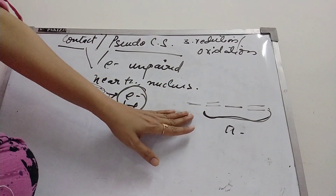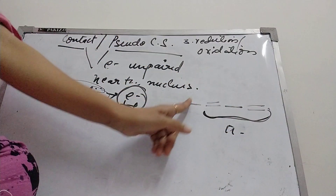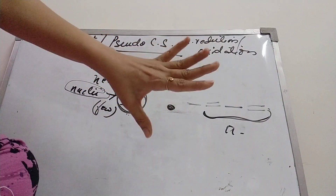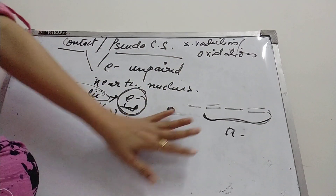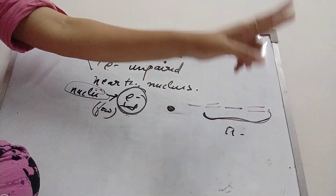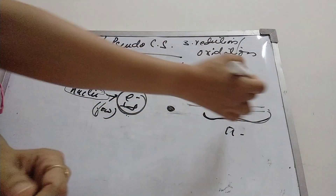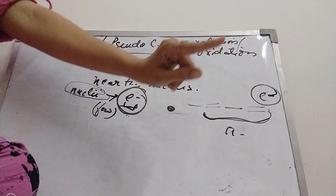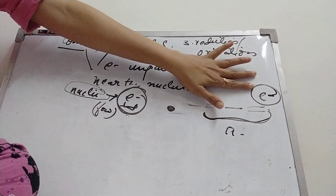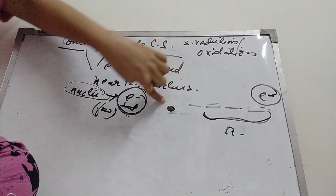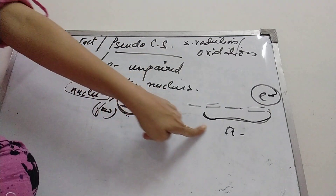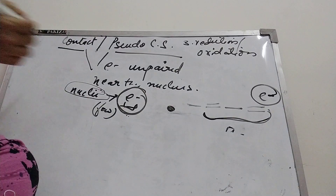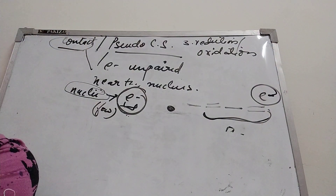There must be a pi bond present. Even if the paramagnetic nucleus is farther away, if there is a delocalized pi set of electrons between the paramagnetic ion and the NMR active nucleus, the magnetic moment of the unpaired electron will affect the magnetic moment of the NMR nucleus. This results in a contact shift.